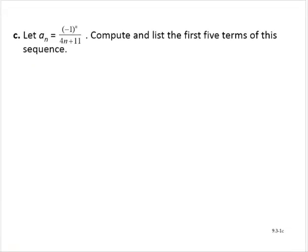Let a sub n be equal to negative 1 to the nth power over 4n plus 11, and we're asked for the first five terms. a sub 1 would be negative 1 to the first power over 4 times 1 plus 11. Notice that raising a negative number to a power changes the sign depending on whether the power is odd or even. Negative 1 to the first power is negative 1. In the denominator, 4 times 1 plus 11 is 15. So a sub 1 is negative 1 fifteenth.